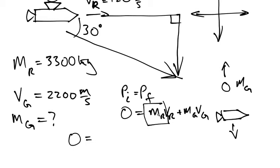The new mass of the rocket is the original mass minus the mass of the gas that left it.